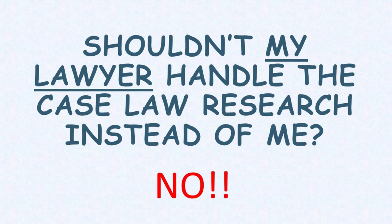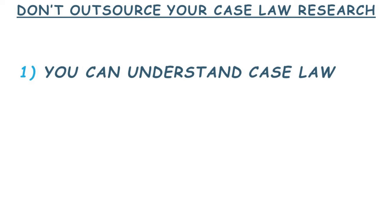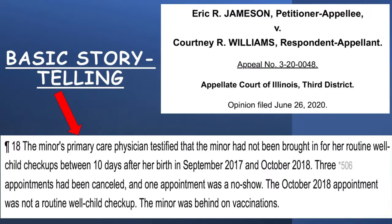Shouldn't my lawyer handle the case law research instead of me? The answer is no, and here's why. First, case law is written in plain English and you can understand it as well as a lawyer can. Appellate court child custody decisions are just stories about other families, usually three to five pages long, discussing facts and applying the law, so there's very little confusing legal language. These cases show how other parents were chosen as primary custodial parents, helping you connect your story to how family court decisions are supposed to be made. Cases will guide you on which facts to emphasize in court and help you avoid bringing up irrelevant issues in your trial.